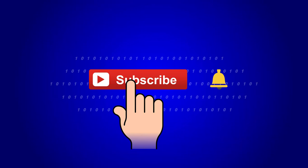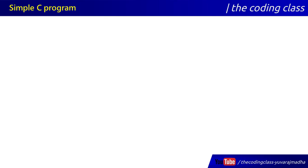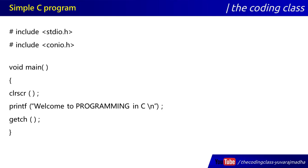This is a simple program that we include in the first two lines: standard io.h and console io.h. These two header files play the most important role. In these files, we store the standard io file, which includes printf and scanf.